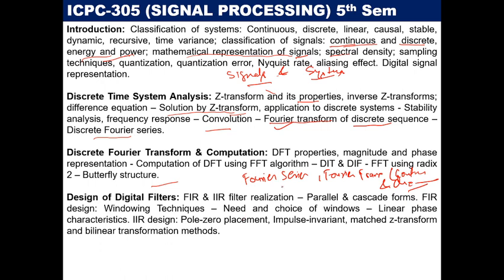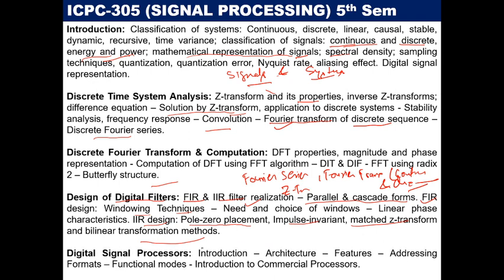Then we will start with the concept of digital filters. In digital filters, we will cover FIR and IIR filters in parallel and cascade forms. We will also work on designing FIR filters using the window technique and various other techniques. For IIR design, we will cover pole-zero placement, impulse invariance, matched Z-transform, and bilinear transformation methods. Finally, the digital signal processor will be covered at the end of this lecture series.